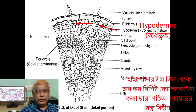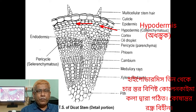Epidermis contains cuticle. Beneath the epidermis there is hypodermis. It consists of few layers of parenchymatous cells. Hypodermis contains no intercellular spaces.